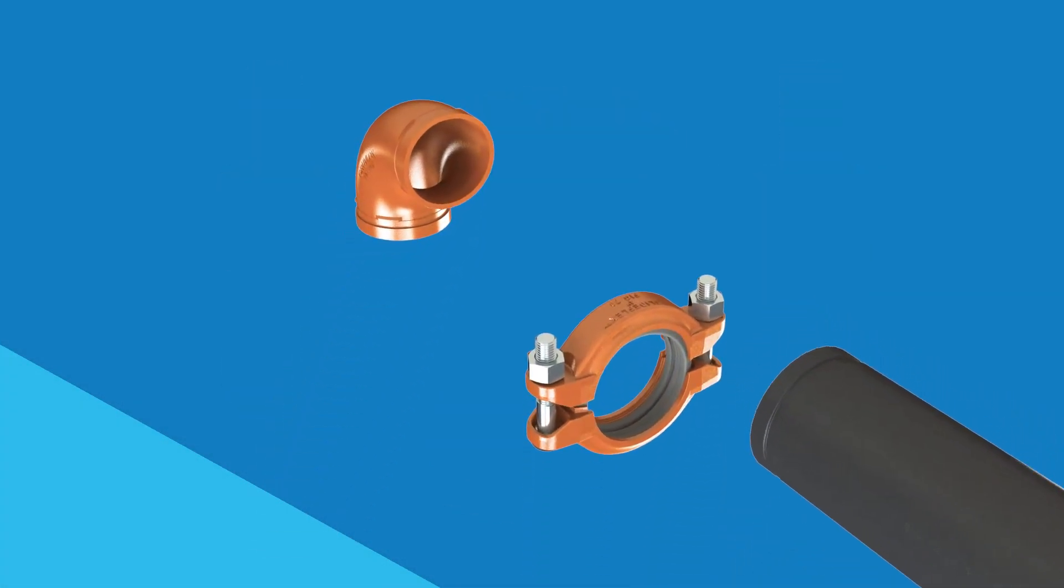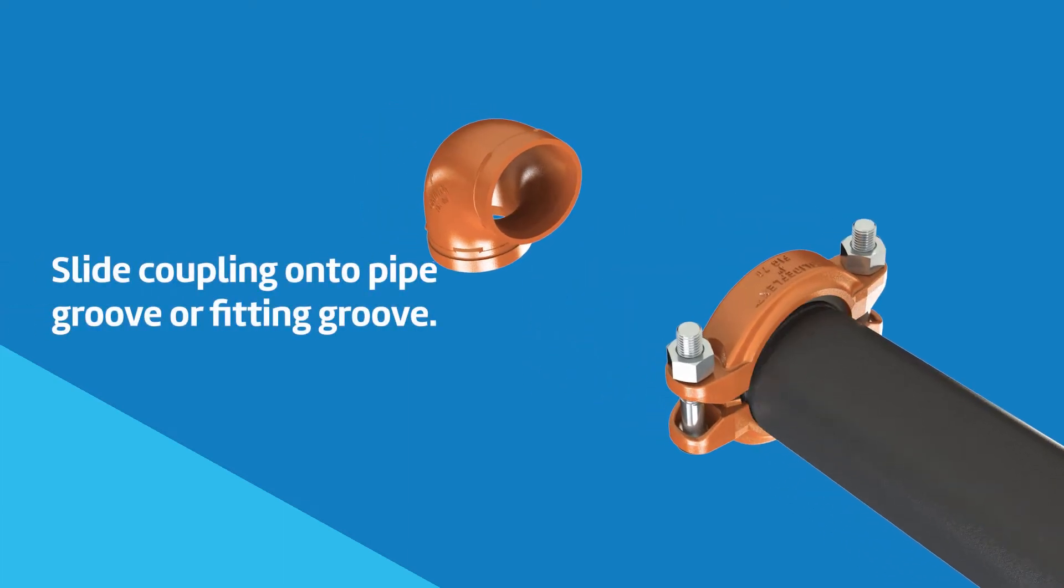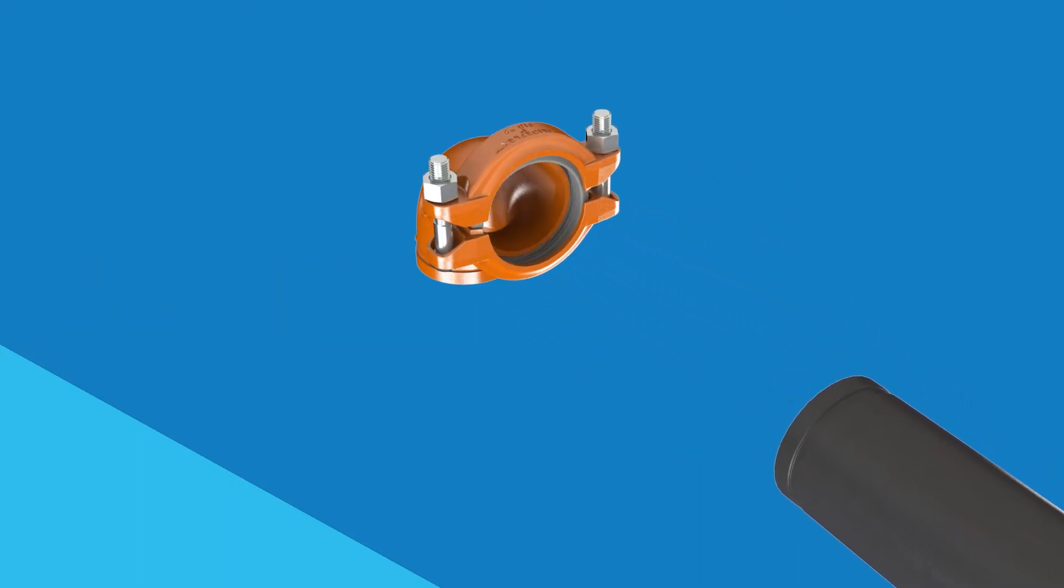For pipe-to-fitting and pipe-to-valve joining, slide the figure 70 coupling halfway onto the pipe end or halfway onto the grooved end of the fitting or valve so the coupling keys and groove are aligned.